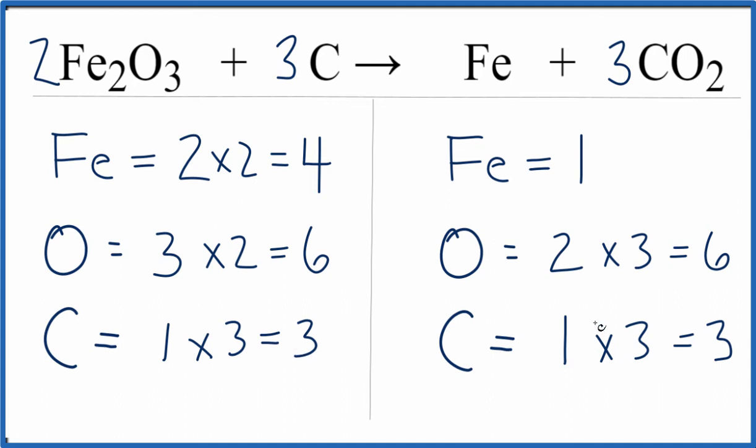Irons are left. I have four irons on the reactants, only one over here. I'll just put a four in front of the Fe. And that'll give me four iron atoms. And with that, we're done. Everything is balanced.